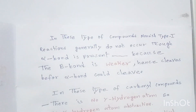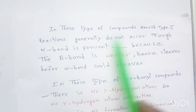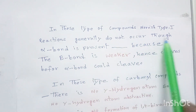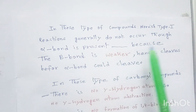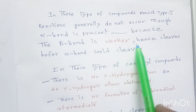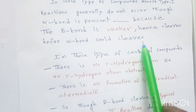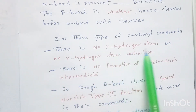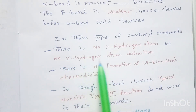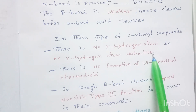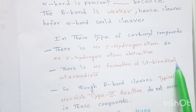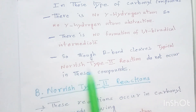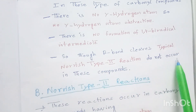In these beta cleavage compounds, Norrish type 1 reactions generally do not occur, though the alpha bond is present, because the beta bond is weaker and cleaves before the alpha bond can cleave. Also, in this type of carbonyl compound there is no gamma hydrogen atom, so no gamma hydrogen abstraction can take place and no 1,4 biradical intermediate is formed. Therefore, typical Norrish type 2 reactions do not occur in these compounds.